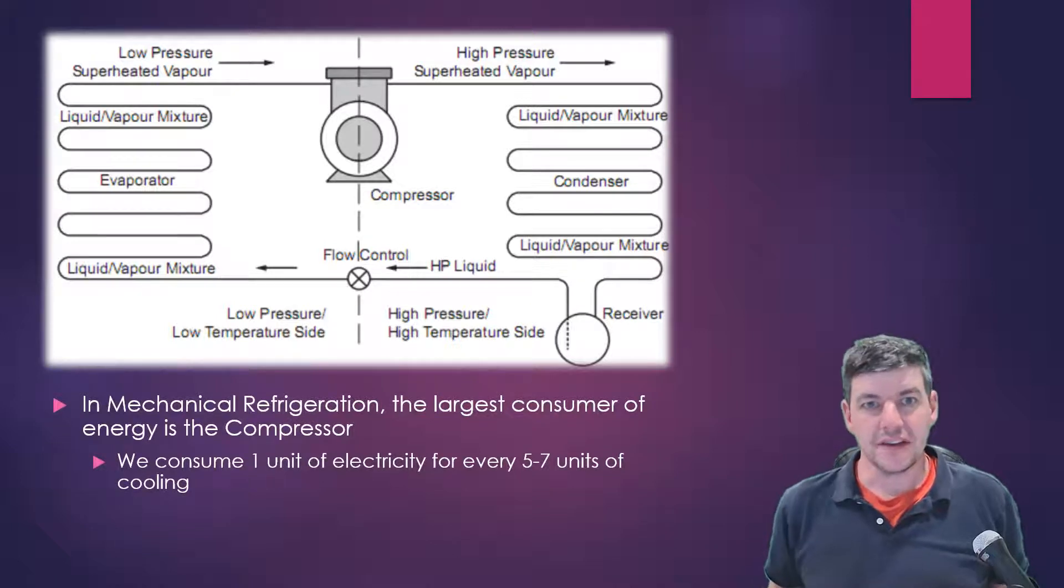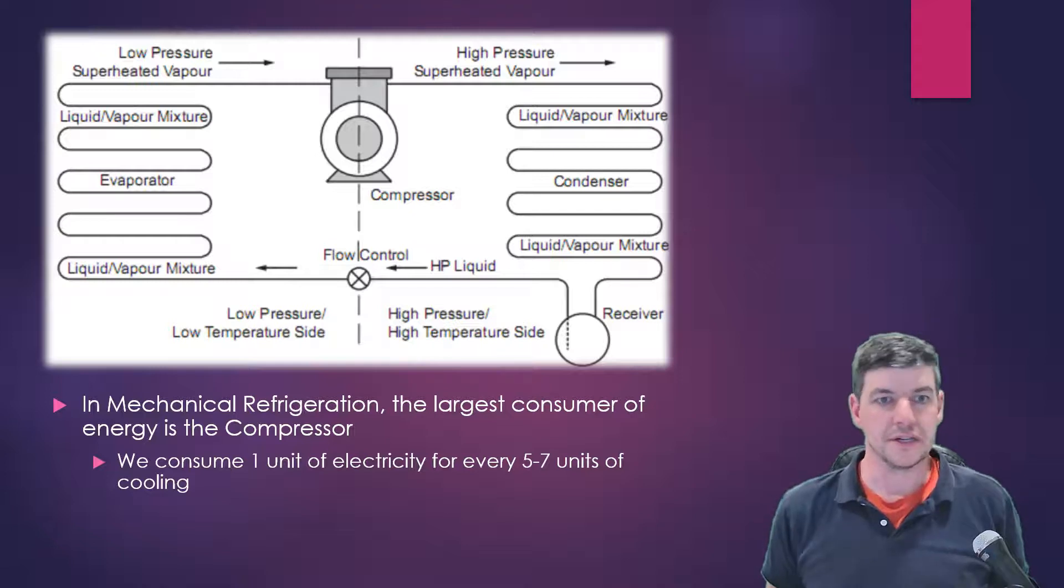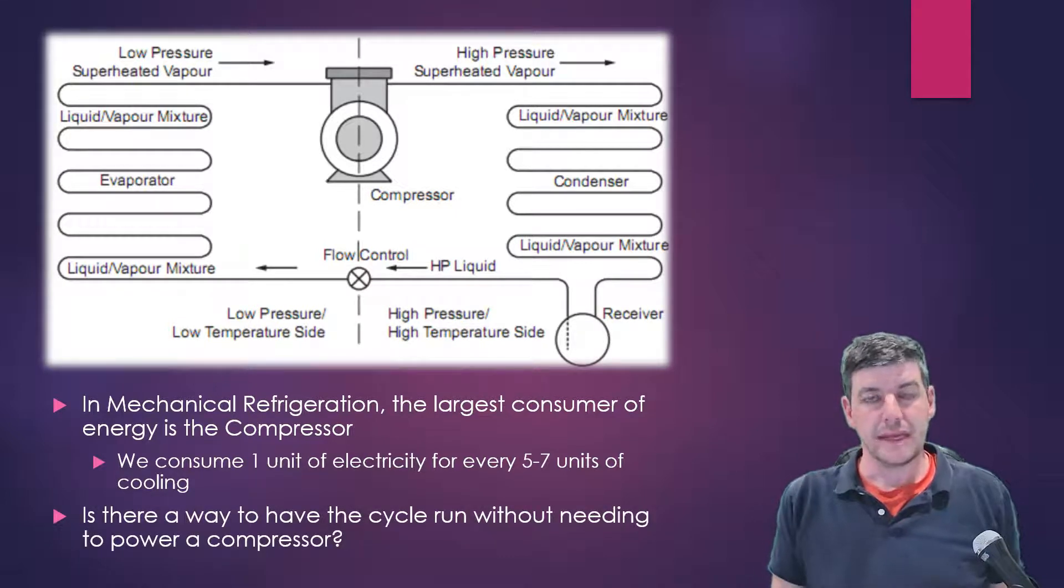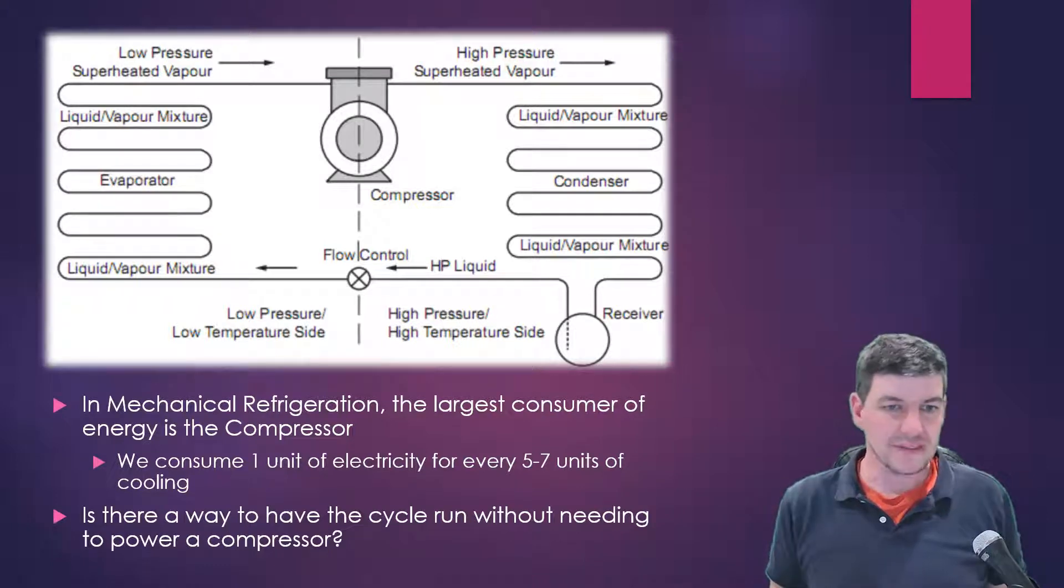Inside of this cycle, the compressor does a lot of work. It requires a lot of energy, and roughly one unit of energy goes into the compressor for every five or so units of cooling that we do inside of our cycle.